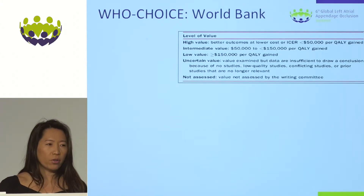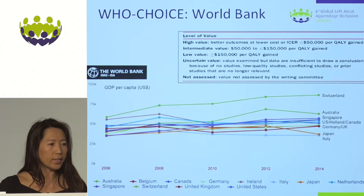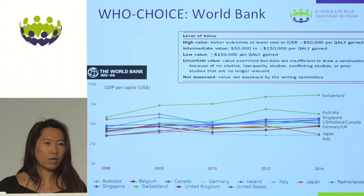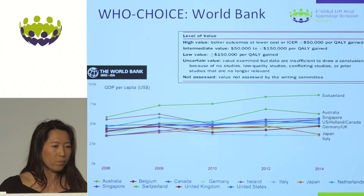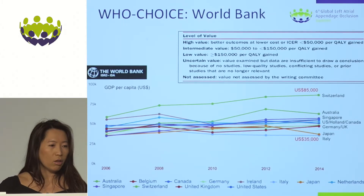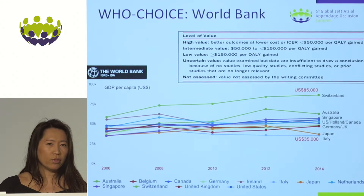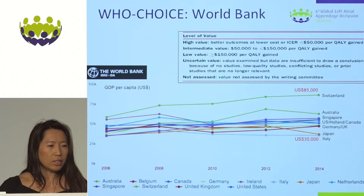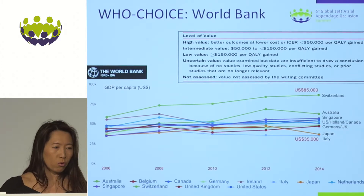We know that GDP varies in the developed world. Looking at the most recent data up to 2014 from the World Bank, Switzerland is at $85,000 GDP per capita — well ahead of other developed countries — while the United States and Canada are in the $50,000 range, and Italy is about $35,000. As a mean, $50,000 seems to be a very reasonable estimate for most of these countries.